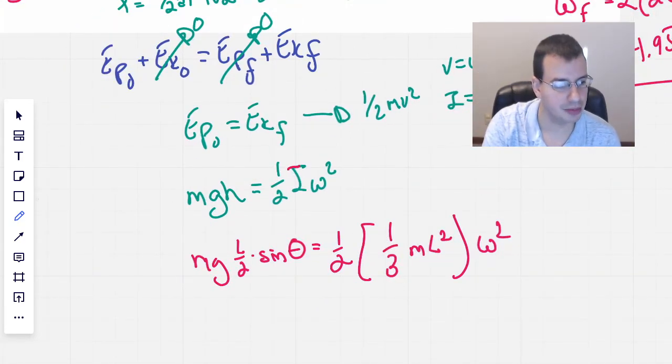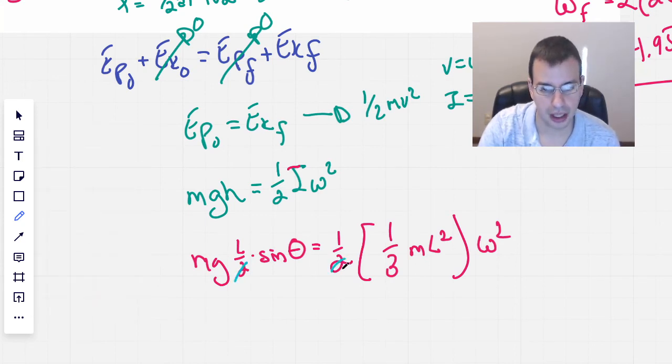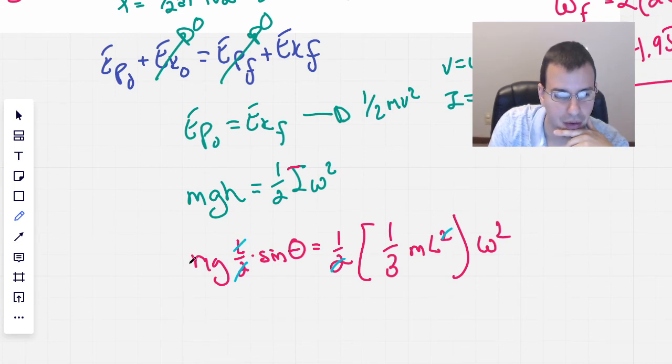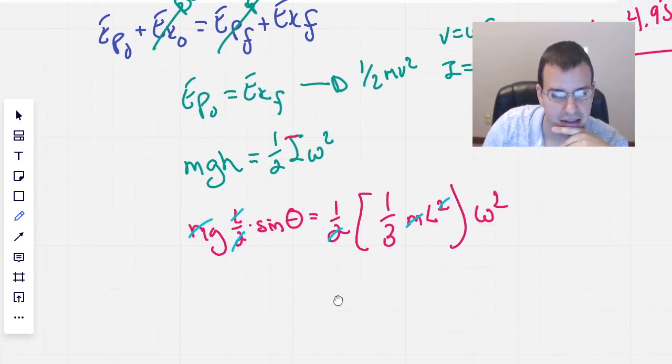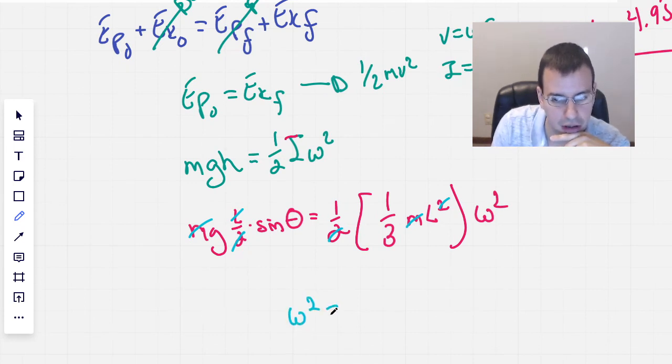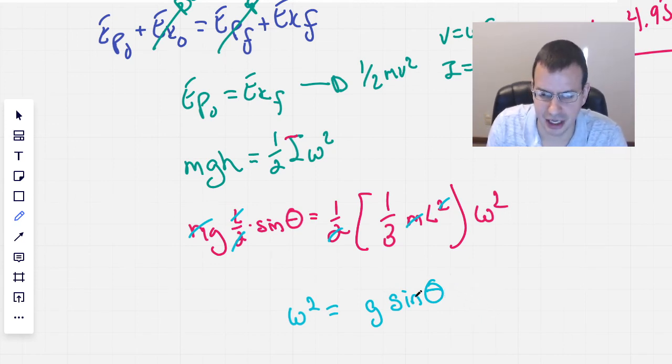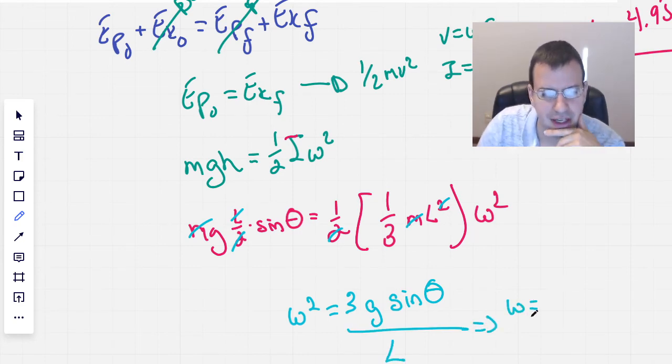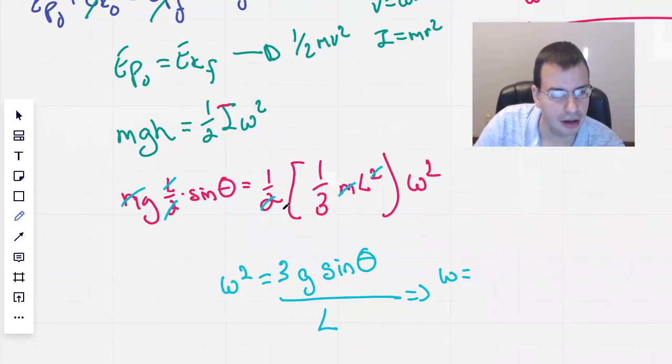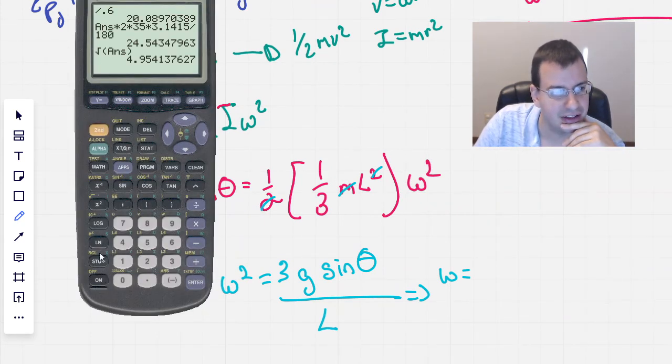So then we're going to do some simplifying. The 2's will go away. One of the L's will go away. The mass will go away. And we're going to be left with omega squared equals G sine of theta times 3 divided by L. It kind of makes sense. It kind of feels like a bigger stick would fall slower. 3 comes up. L goes down. 2 goes away. Let's go for this. I'm feeling confident and arrogant.